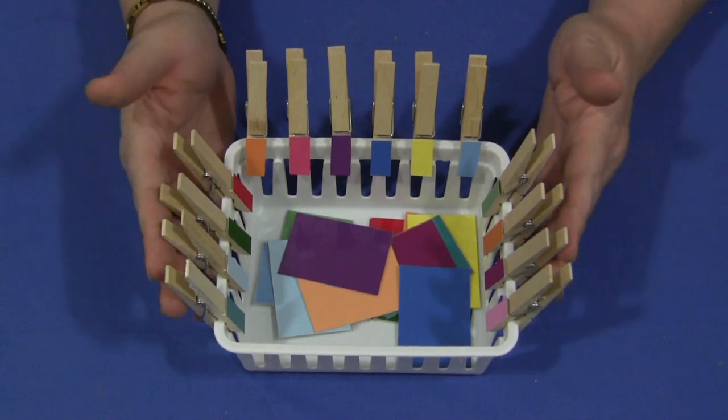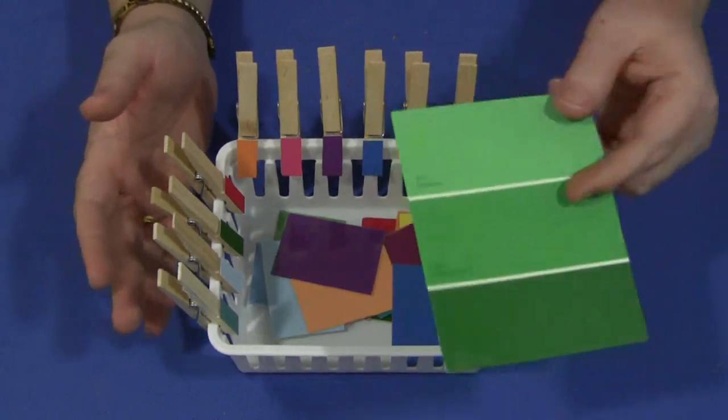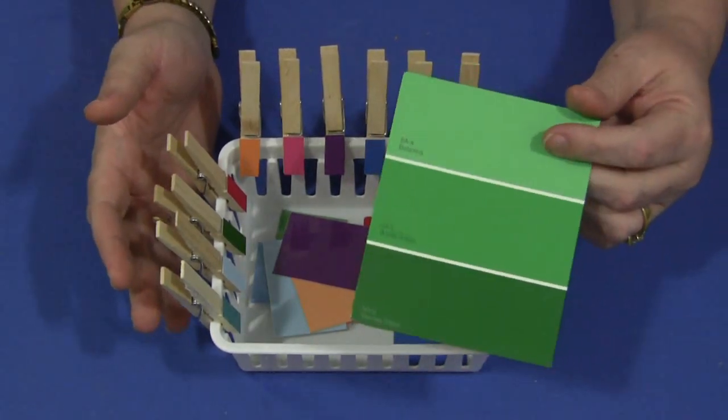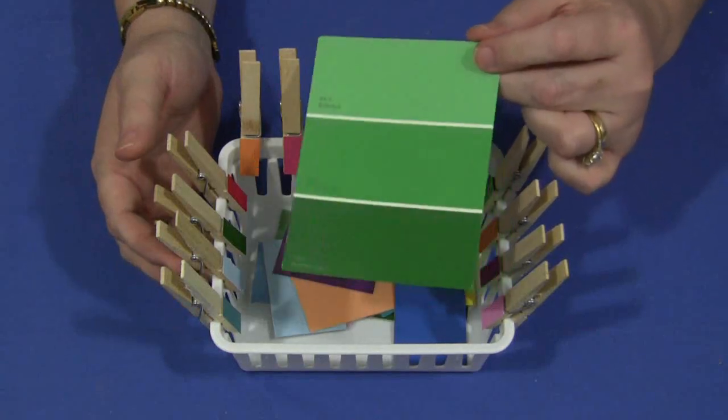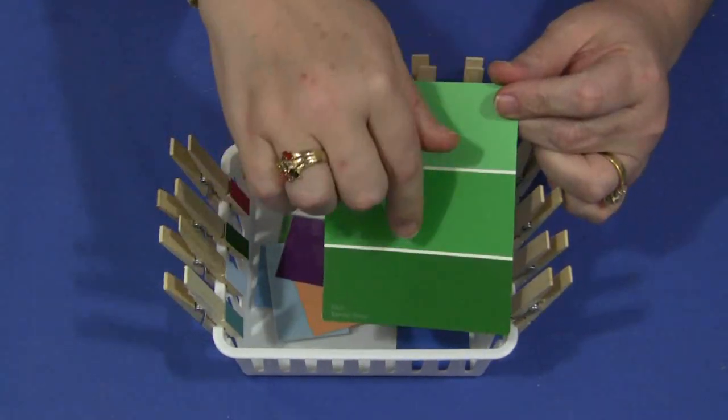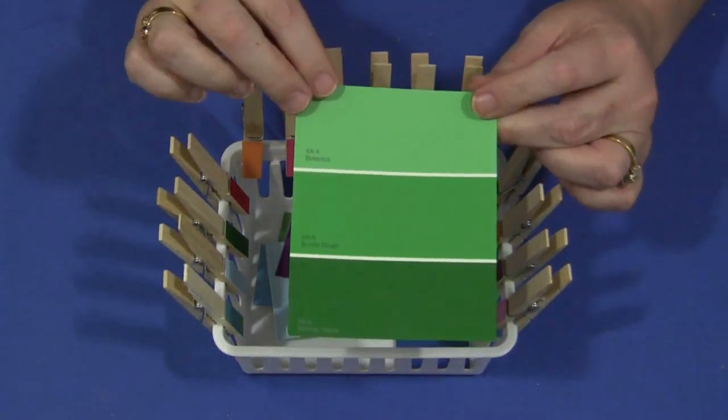You'll need to have plain wooden clothespins as well as paint sample chips. These can be found anywhere that sells paint. They come in a different variety of styles depending upon the manufacturer of the paint. They usually have maybe three or four colors. Some are a little bit thinner in width than this particular piece.